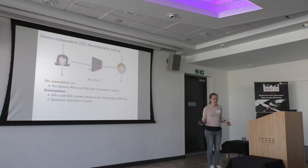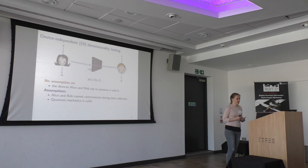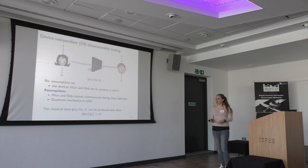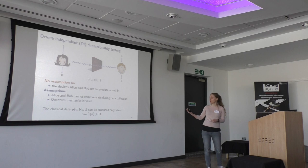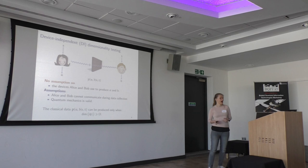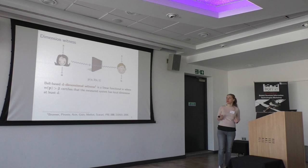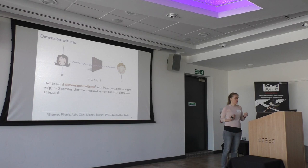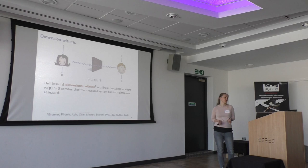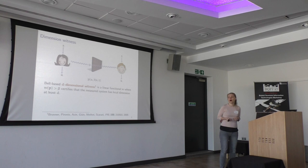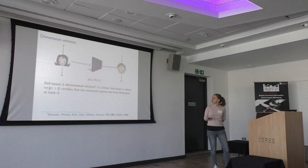What we would like to say is a statement of the following form: given this classical data that we have observed, the only way for Alice and Bob to produce this data is if the dimension of the state that they share is at least something. This was first formalized in a work by Brunner and others, and they proposed this notion of dimension witness. In particular, there were Bell-based dimension witnesses. Such a witness would simply be a linear function W — your Bell inequality. Now if your correlation achieves Bell violation beta, then you can be sure that the state needed to produce it had dimension at least D.